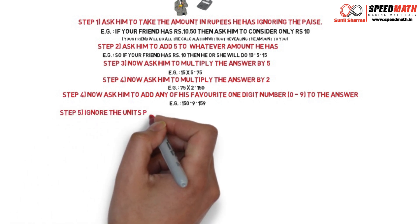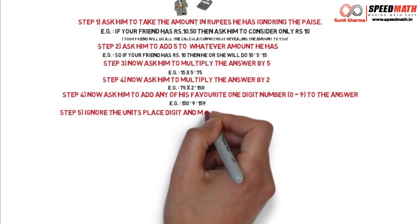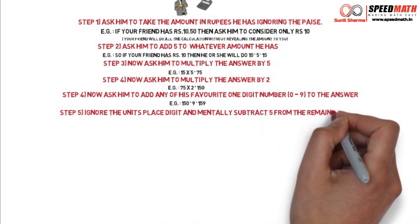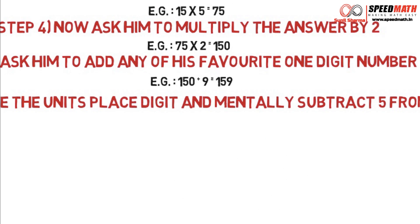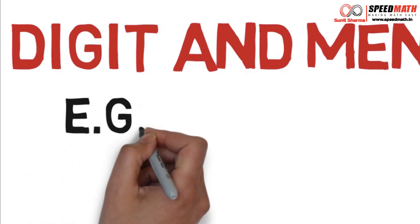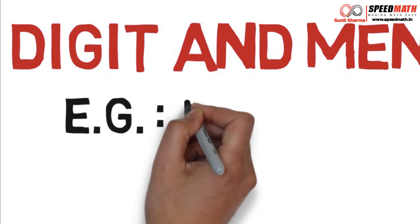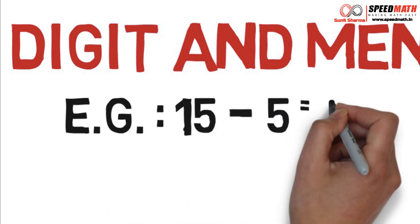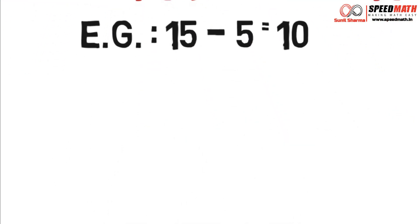Step 5: Whatever number your friend tells you, ignore the unit's place digit and subtract 5 from the remaining digits. In our example, the total was 159. So as per the rule, ignore the unit's place digit — we ignore the 9. The remaining number is 15, and from 15 if you subtract 5, the answer is 10. And if you remember, that was the original amount at the beginning of this tutorial.